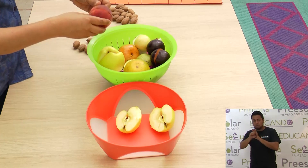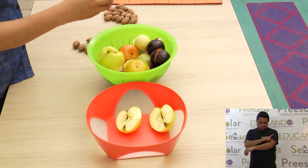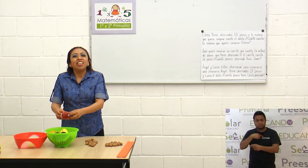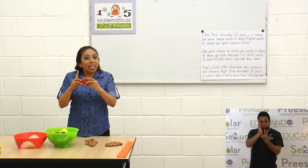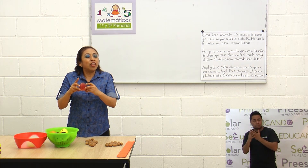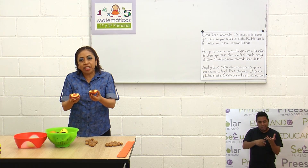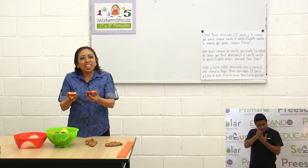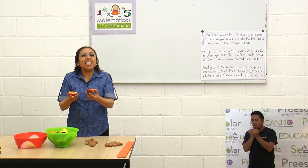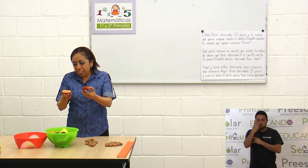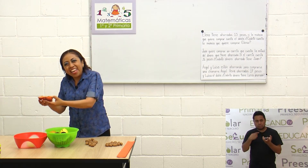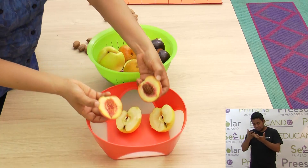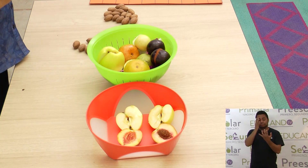También traje otras frutas. Por ejemplo, un durazno. Este durazno lo cortamos en dos partes iguales. Es interesante que escuches y veas que son dos partes iguales, porque si una parte es más grande que la otra, ya no serían mitades. Para que sean mitades, tienes que cortarlas en partes iguales — en este caso, en dos partes iguales. Y aquí tenemos dos mitades de durazno.